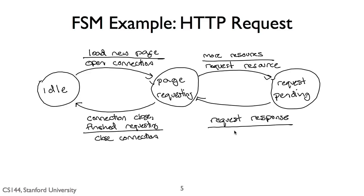On one hand, this is a nice simple FSM. But if we were to try to implement it, it leaves a lot unsaid. Specifically, we have four events in the system: page request, more requests, receive response, and connection closed. So what happens if the connection close event arrives when we're in the request pending state? Or when we receive a page request while in the page requesting state? Or receive a response while in the idle state? If you want to be completely explicit and careful, you should specify what happens on each state for every event.